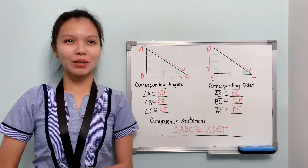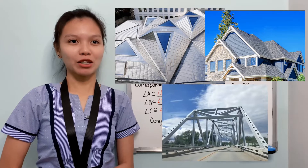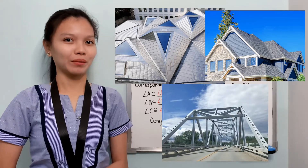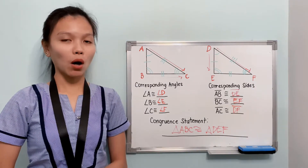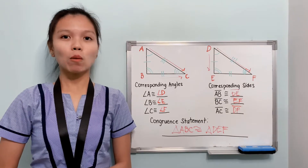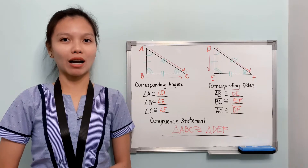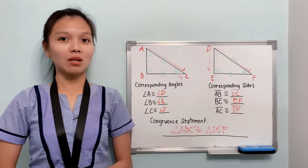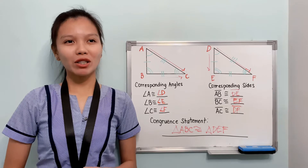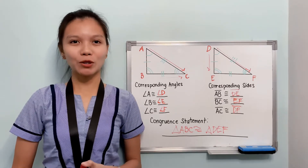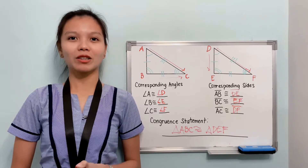Congruent triangles are used in creating the roofs of buildings and houses. We can also see congruent triangles in the rails of bridges so that they can become strong and firm. Don't forget that in writing the congruent statement, we always need to consider the arrangement of the letters — if the letters are reversed based on their corresponding sides or angles, the congruent statement will also be wrong. How can we say that triangles are congruent? We can use postulates on triangle congruence, which are based on what pairs of corresponding parts illustrate triangle congruence.